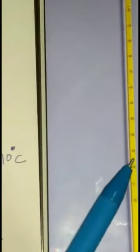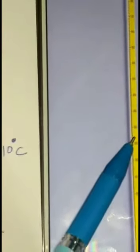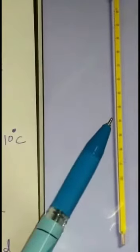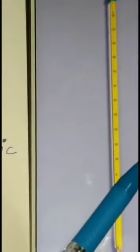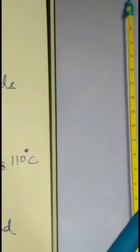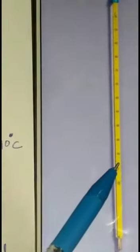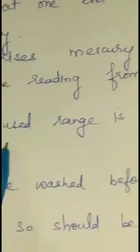As the temperature rises, the mercury expands. When the mercury rises into the thin tube, the stem of the thermometer is marked in degree Celsius or degree Fahrenheit. The height of the liquid gives the reading of the temperature. They are available in many ranges.